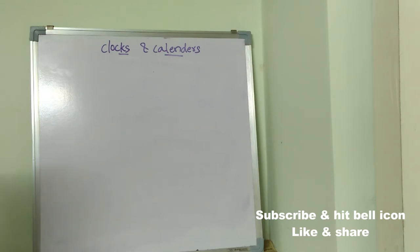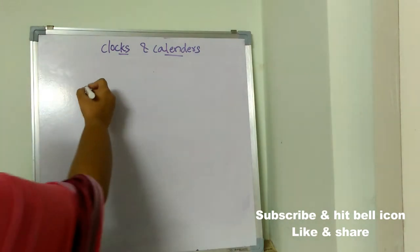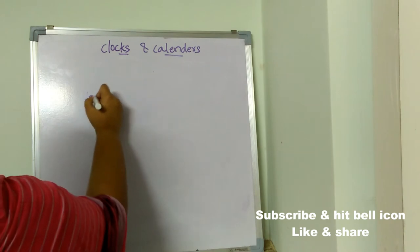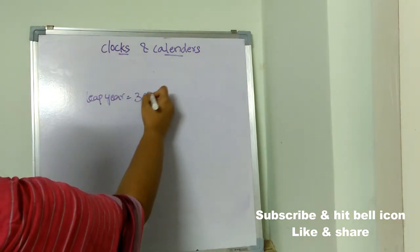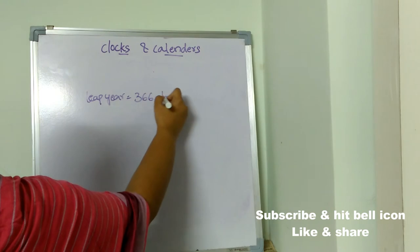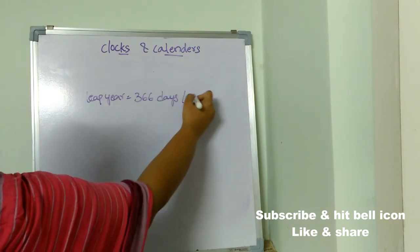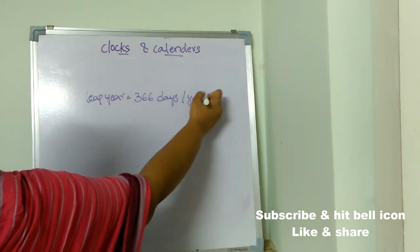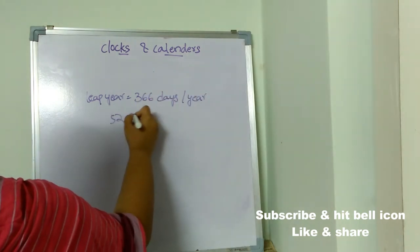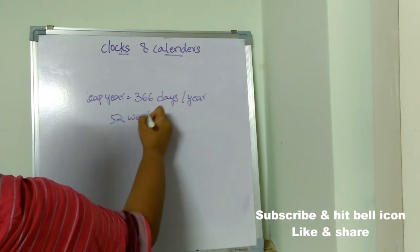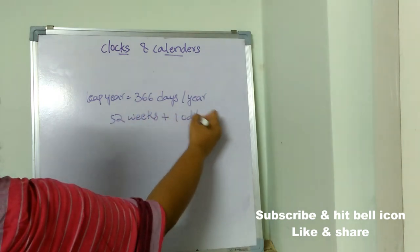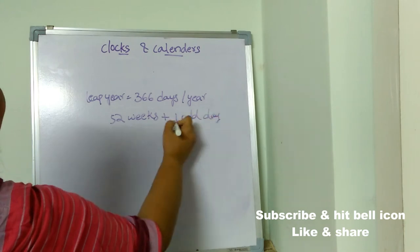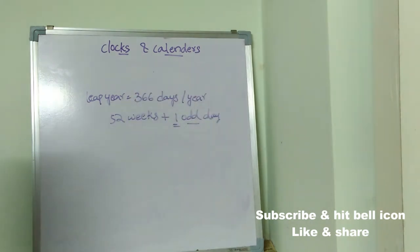Coming to the leap year, we already know there will be 366 days in the year, which is 52 weeks plus one odd day. That extra day is called the odd day.